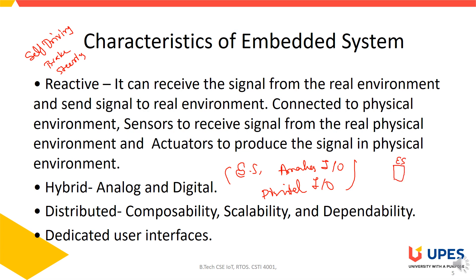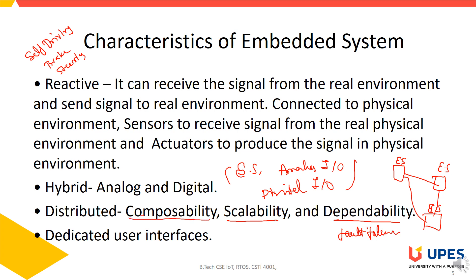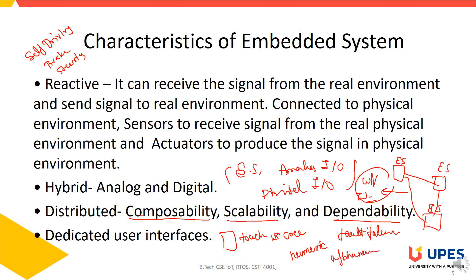Embedded systems can also be distributed, meaning multiple systems work together with the help of some communication to achieve larger goals. This provides scalability, dependability, and fault tolerance. Communication can be in the form of Wi-Fi, Zigbee, or Bluetooth. Embedded systems also have a dedicated user interface — it may have a touch screen, numeric keyboard, or alphanumeric keyboard, based on the application.